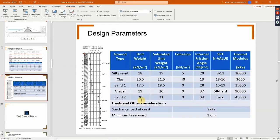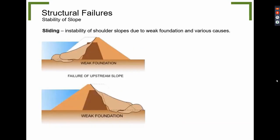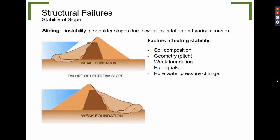Another structural failure is sliding. Sliding of soil mass is a common structural failure for all retained and sloping soil in embankment dams. Instability of shoulder slopes is due to weak foundation and other external causes. Factors affecting stability include the soil composition of the embankment, the geometry or slope pitch of the shoulders, weak foundation, earthquake, and pore water pressure changes.